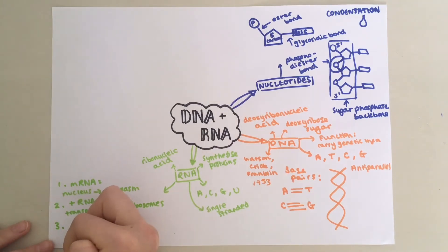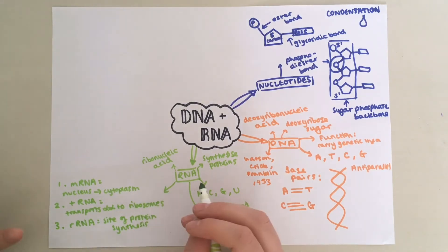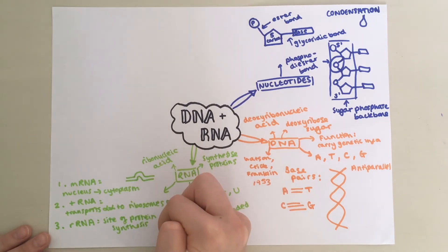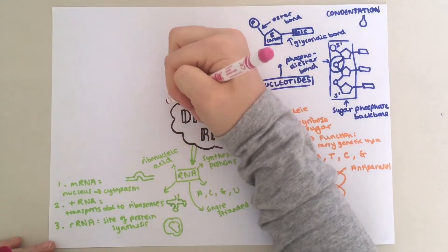Lastly, you've got ribosomal RNA, rRNA, which is basically the site of protein synthesis. Essentially, rRNA makes up the ribosomes. You may want to recognize the shapes of these.